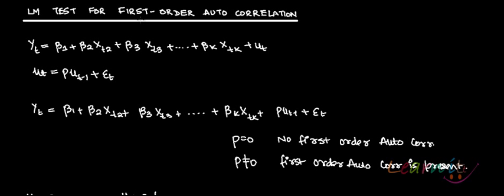LM test for first-order autocorrelation. You have yt equals β1 plus β2xt2 plus β3xt3 and so on to βkxtk plus ut. And ut follows first-order autocorrelation: ut equals rho of ut minus 1 plus εt. You can also write this model with ut replaced by rho of ut minus 1 plus εt.